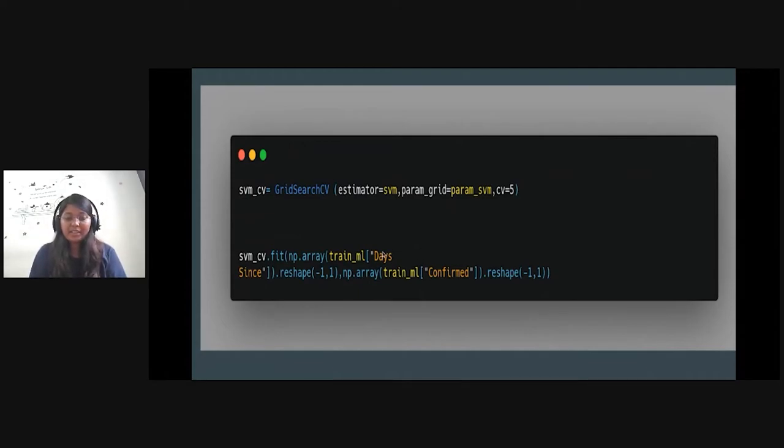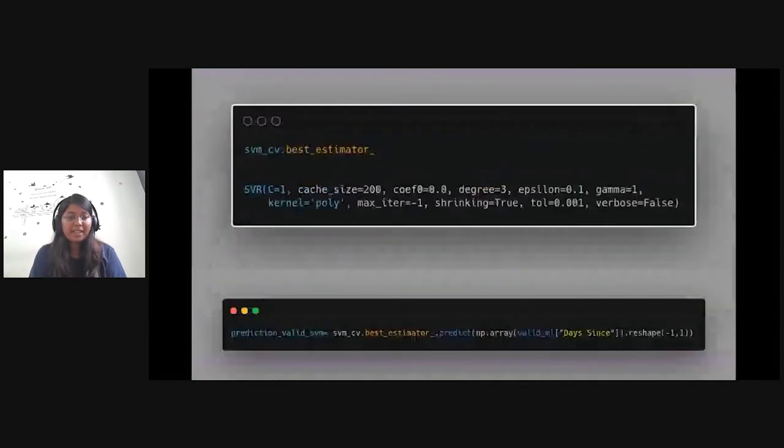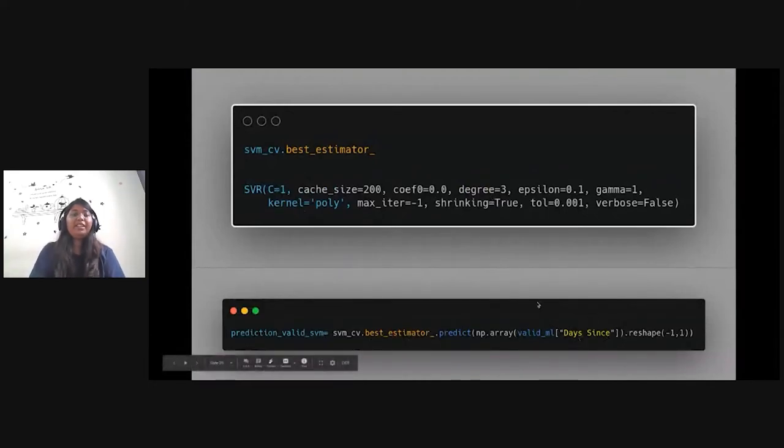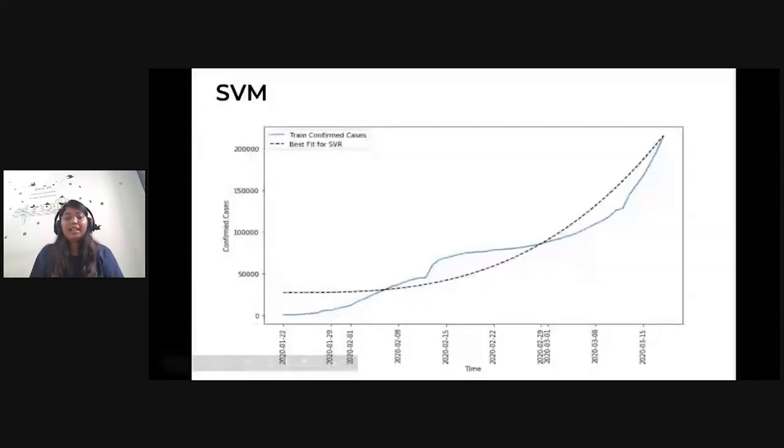The training set that we form was training and validation. So whenever we are fitting the curve, we have to do it in the training data set. And whenever we are predicting, we have to do it in the valid data set. So here we have taken training data sets of days and confirm cases. We have performed the best estimator. So here we have given all the parameters that it might need. And then we predict in your valid machine learning data. What we see through the plot is it's performing better than linear regression. It is following the trend as well as accuracy is also good, but we are not sure that in future it will be performing this well. To overcome that, we can go into neural networks.